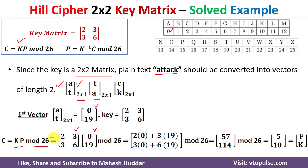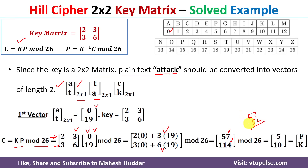For matrix multiplication, the row of the key matrix is multiplied by the column of the plaintext vector. So 2×0 + 3×19 gives the first element, and the second row gives the second element. Solving these gives 57 and 114. Now we take mod 26: 57 mod 26 — since 26×2 = 52, we get 57 − 52 = 5. So the first result is 5.